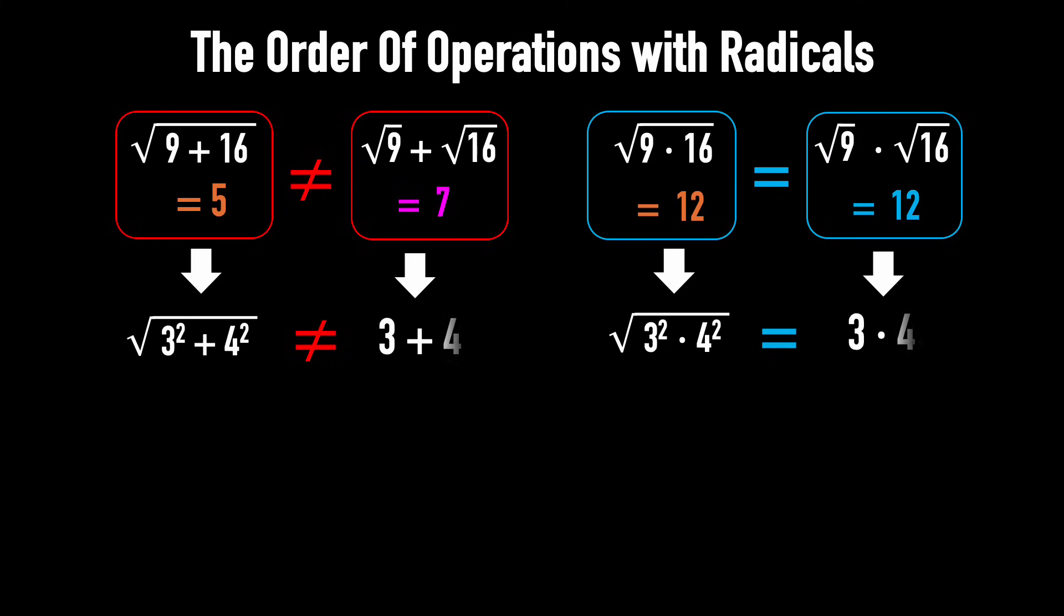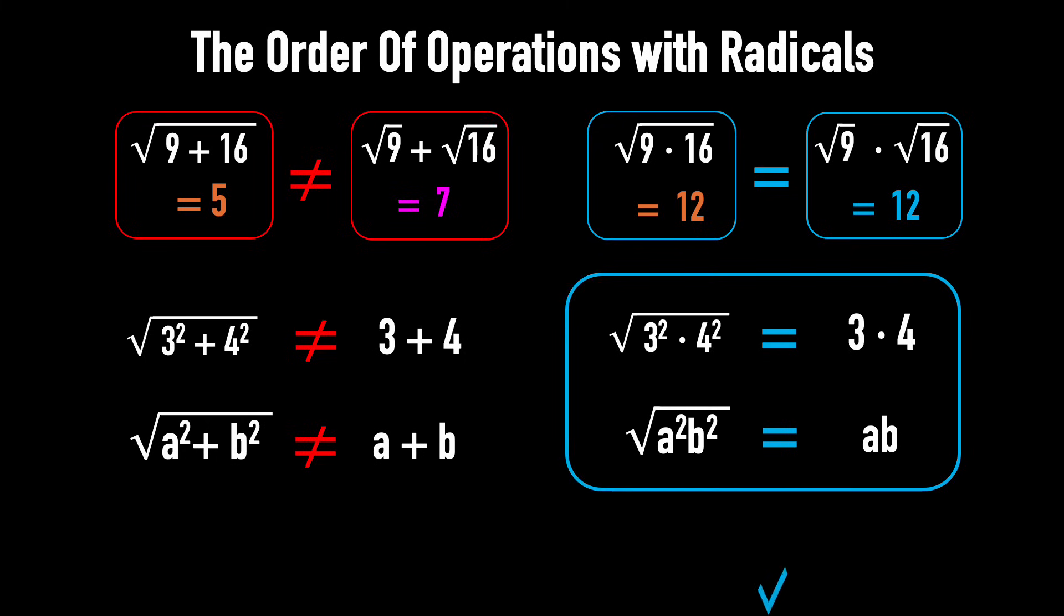In general, the square root of a squared plus b squared is not equal to a plus b, but the square root of a squared times b squared is equal to a times b. So, remember, the square root sign is distributive over a product, but not over a sum. It's an extremely helpful rule.